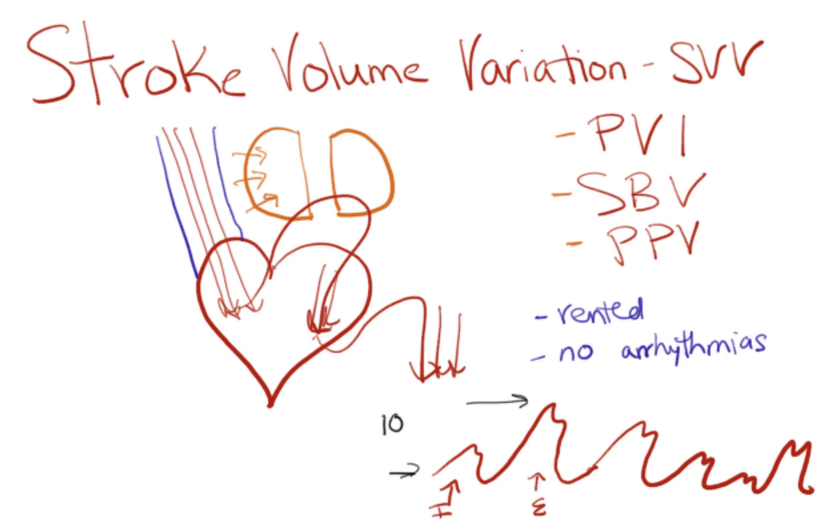And 10 to 15 percent is generally considered a normal amount to vary by. So normal stroke volume variation is 10 to 15 percent. So it's normal for your lungs to put some pressure on your vena cava during inspiration and then reduce that pressure during expiration when you're on a ventilator.